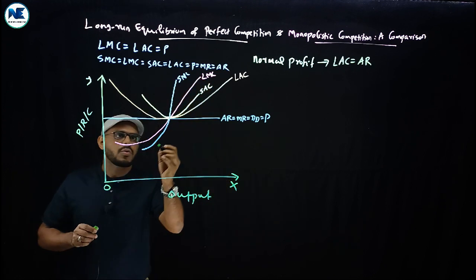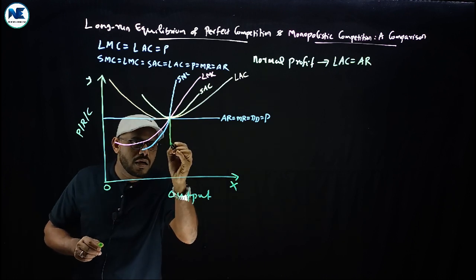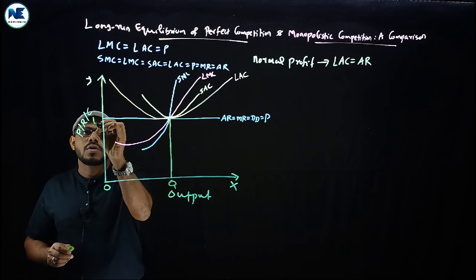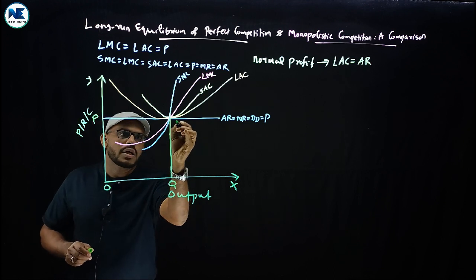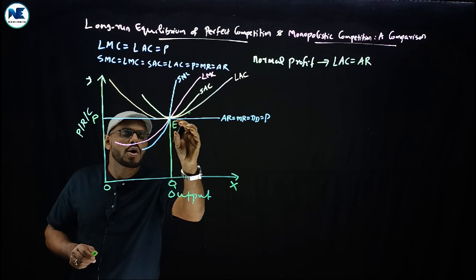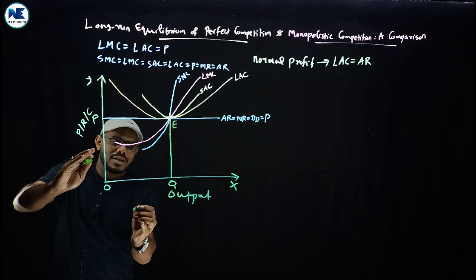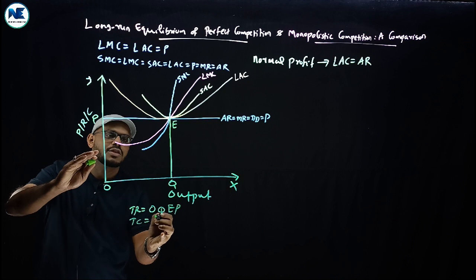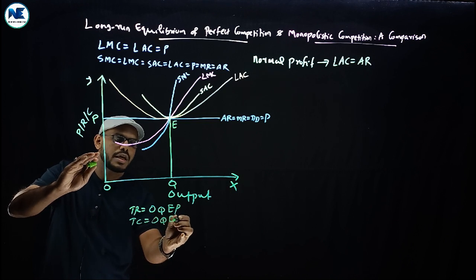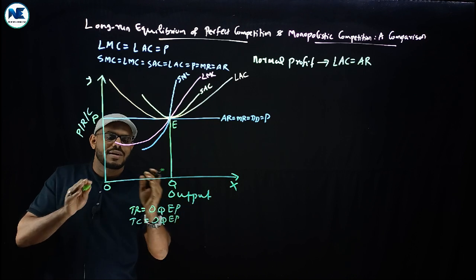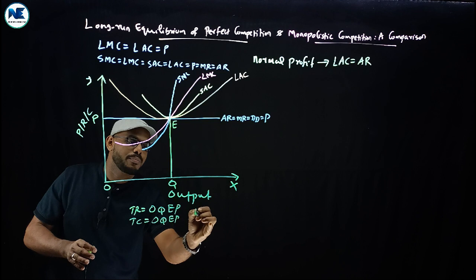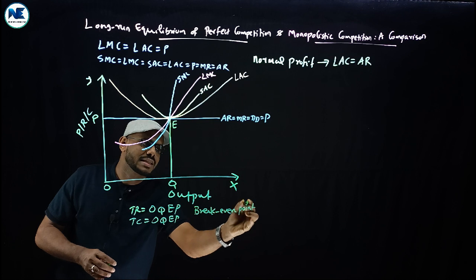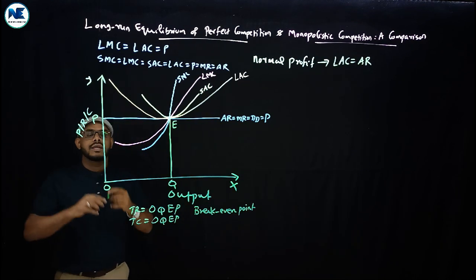We can represent the long-run equilibrium output as Q and the equilibrium price as OP, with equilibrium point E. Total revenue equals OQEP and total cost also equals OQEP — that is, total revenue equals total cost. This is the break-even point in economics: the firm earns only normal profit. This output Q is the ideal output, also called the optimum level of output — the socially desirable output.